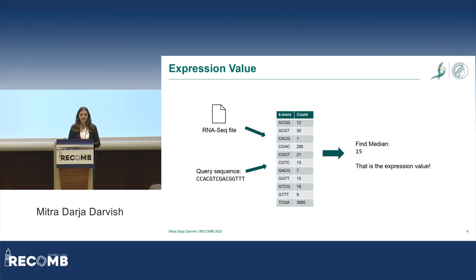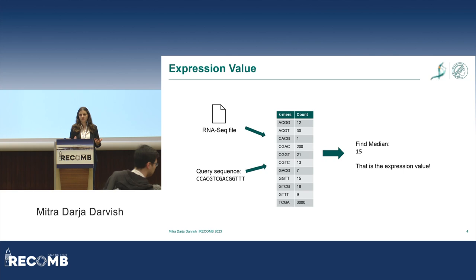You have your query sequence, which can be a transcript, a gene, or anything you're interested in. We count how often the k-mers in that file occur, then take the median of these values and say this is how the sequence is expressed. That's basically it.